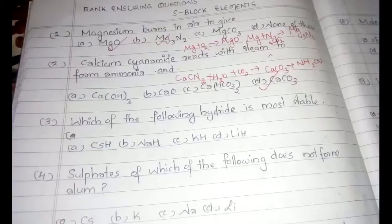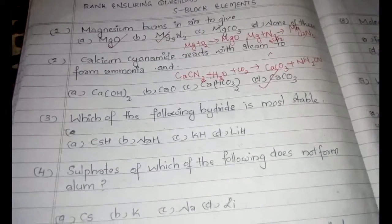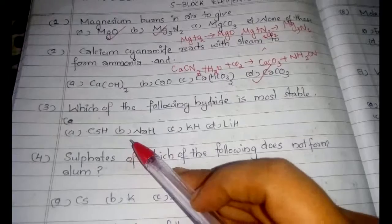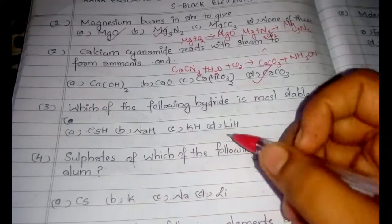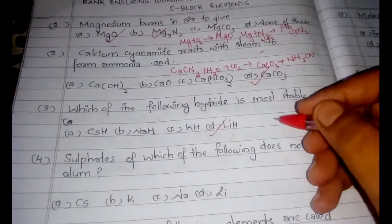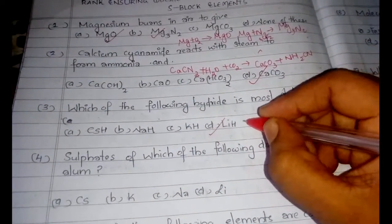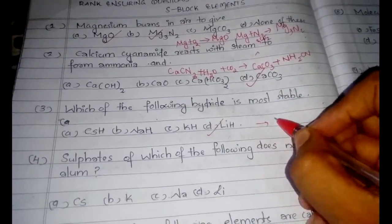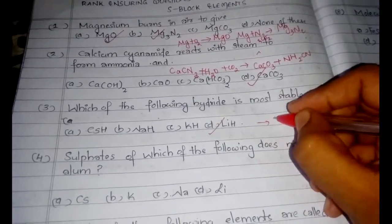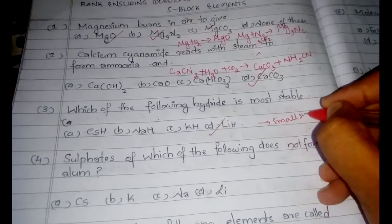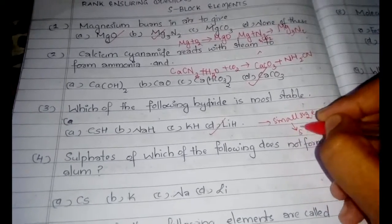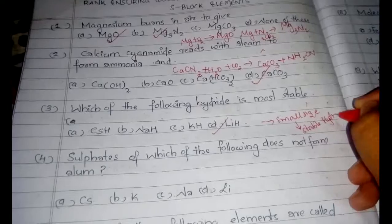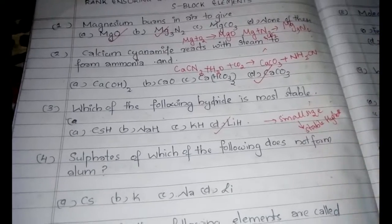The third question: which of the following hydrides is the most stable? Among the options, LiH is the smallest and is the most stable hydride. Because of its small size, it forms a stable hydride. Write down this point: small size leads to stable hydride.